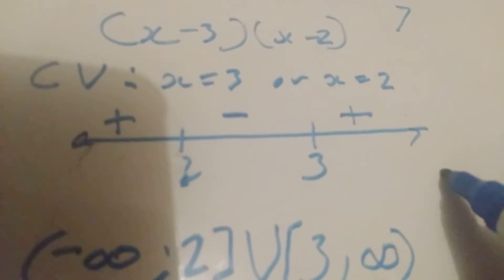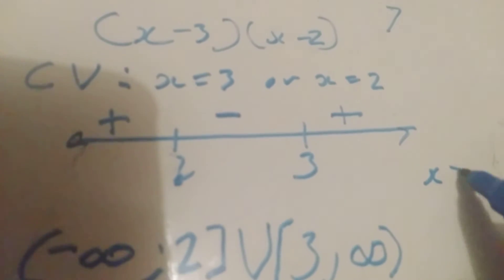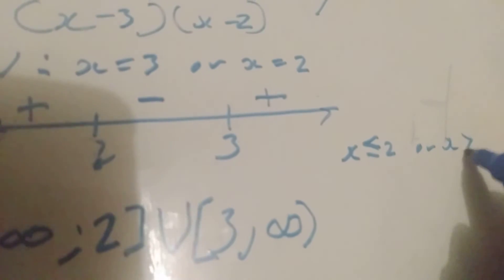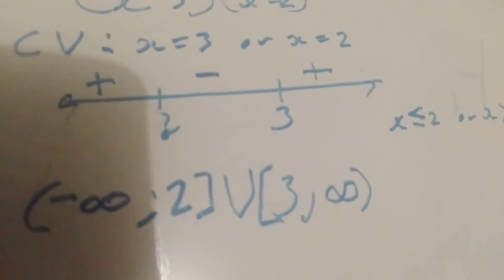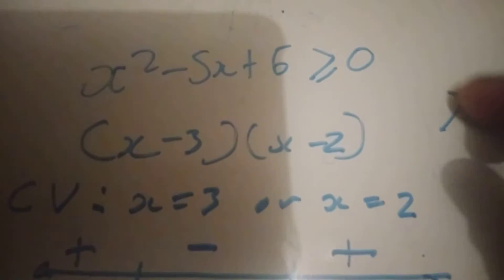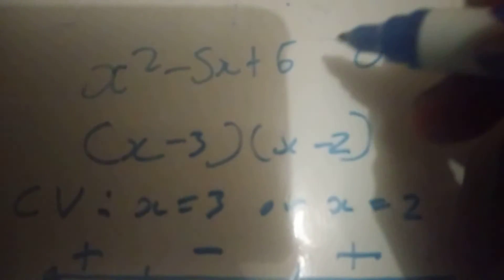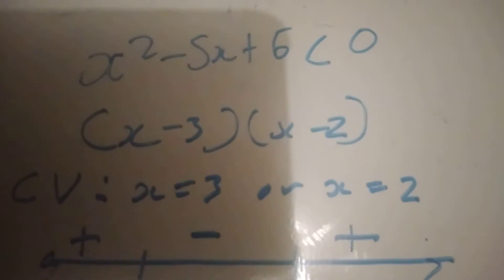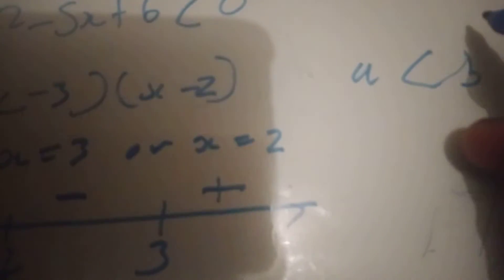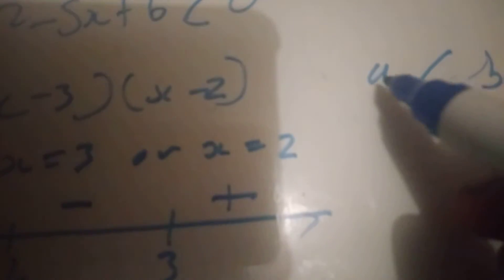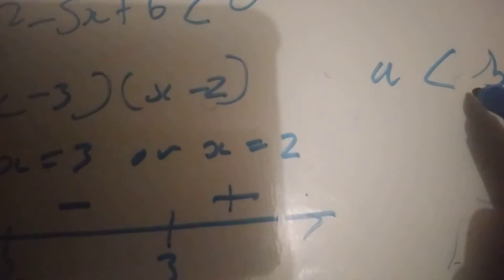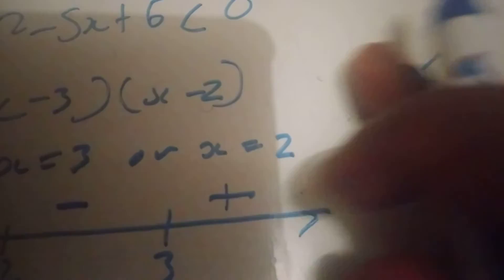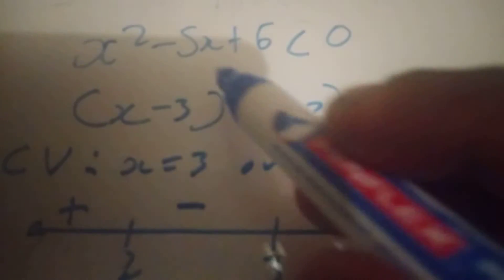Inequality notation is when we write: x ≤ 2 or x ≥ 3. Now let's do another example. If the question says it must be less than 0, that means they want where it's negative — less than 0 means negative. How do you know which is less than and which is greater than? Wherever the pointy side of the inequality sign is facing, that side is small; wherever the wider side is facing, that side is bigger.